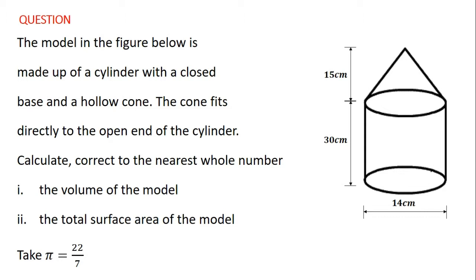In the video on plane figures I explained composite figures — when you have two figures put together to form a single figure, the resulting figure is called a composite figure. A typical example is what you have here: a cone on top of a cylinder. The cylinder has a closed base and the cone is hollow, so the open part of the cone fits onto the open part of the cylinder. The diameter of the cylinder is 14 centimeters, the height of the cylinder is 30 centimeters, and the height of the cone is 15 centimeters.